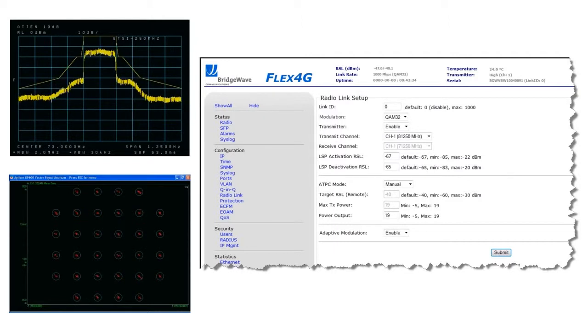The benefit of using 32-QAM here is greatly improved link budget, longer distances, and better availability are achieved with Flex4G over solutions using 64-QAM.